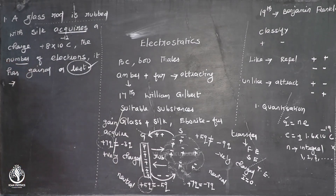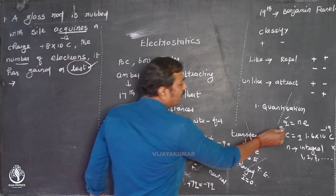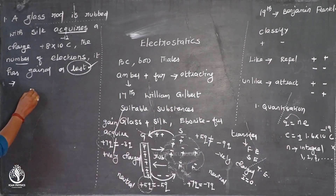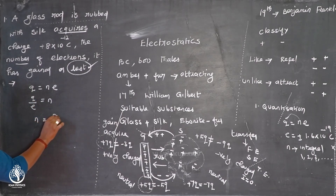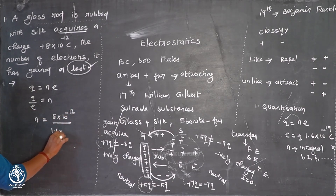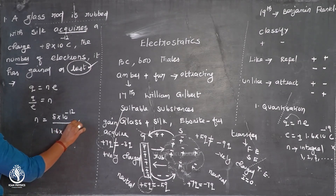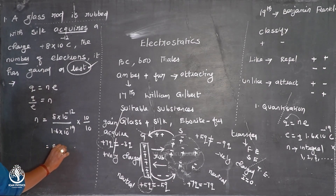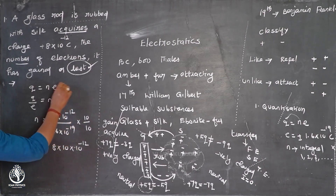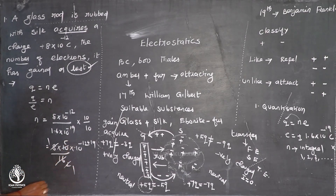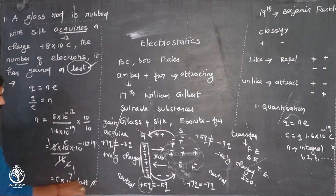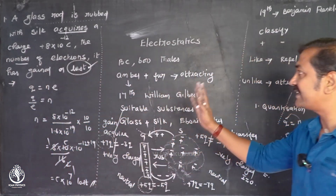Using Q = NE, we get N = Q divided by E. So N equals 8 into 10 to the power minus 12, divided by 1.6 into 10 to the power minus 19. Multiplying numerator and denominator by 10 to handle the decimal: N equals 80 into 10 to the power minus 12 times 10 to the power plus 19, divided by 16. This simplifies to 5 into 10 to the power 7. So the glass rod lost 5 into 10 to the power 7 electrons — that is the answer for the first objective.